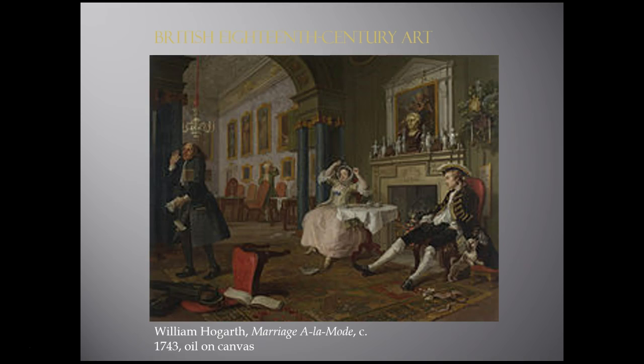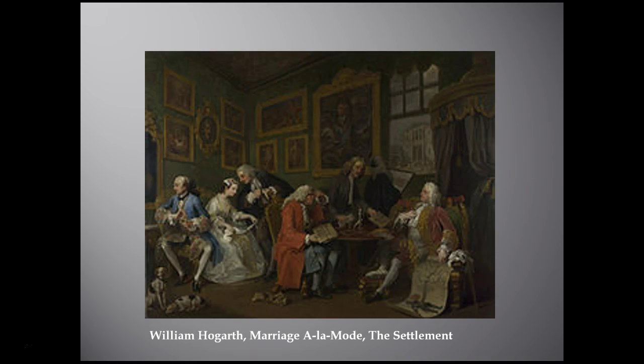This is regarded by many as one of his finest projects and the best example of his serial planned story cycles. In the first of the series, entitled The Settlement or The Marriage Settlement, he shows an arranged marriage between the son of a bankrupt Earl and the daughter of a wealthy but miserly city merchant. Construction on the Earl's new mansion, visible through the window, has stopped, and a usurer — basically a banker who lends money — negotiates payment at the center of the table. The Earl proudly points to a picture of his family tree rising from William, Duke of Normandy, trying to show off his aristocratic heritage.